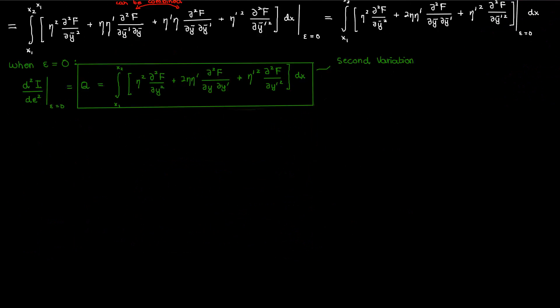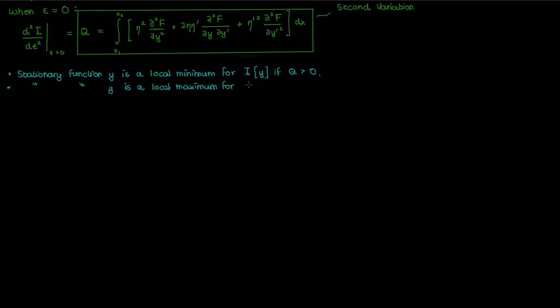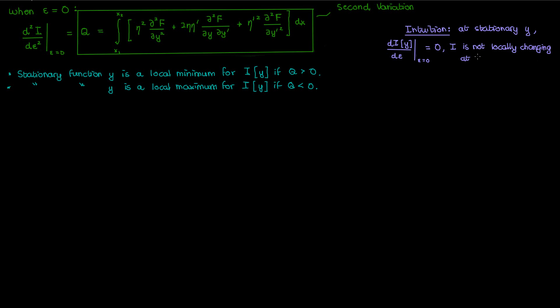Q is what we'll use to determine whether the stationary function y is a local minimum or local maximum of a functional. Just like with single variable calculus, the stationary function for i is a minimum if the second variation Q is positive, and a maximum if Q is negative. Now why should we just accept that? Well, let me give you some intuition. If a function y makes the functional i stationary for ε = 0, then i is not locally changing at that value of y — it's stationary after all, di/dε at ε = 0 is zero.